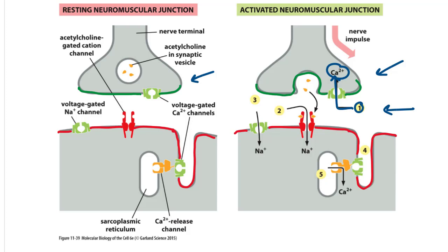Acetylcholine binds to acetylcholine receptors — ligand-gated channels — on the end plate of the myocyte, causing mostly sodium to be conducted across as the receptors open. As sodium enters, the end plate becomes depolarized, activating voltage-gated sodium channels in a positive feedback loop. This leads to voltage-gated calcium channels opening — and since these are attached to calcium release channels on the SR — calcium enters the cytosol from both directions. The resulting increase in cytosolic calcium concentration leads to muscle contraction.